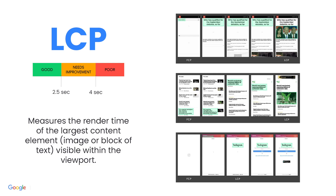First, Largest Contentful Paint. This is a new and straightforward way of measuring page speed — how long it takes for content to load and display. LCP is simple: how long does the largest element in the viewport take to appear? This element could be a hero image, a block of text, or something else. It's when users will perceive that a large and meaningful part of the page has appeared. Ideally, this will appear within two and a half seconds.